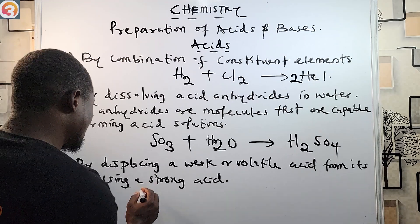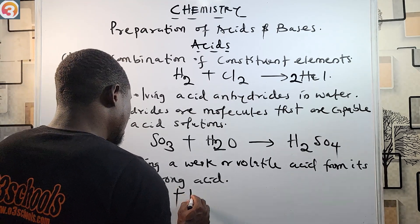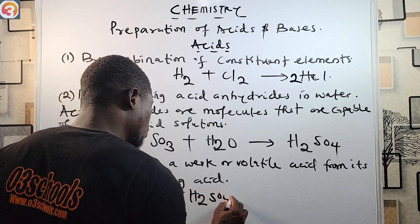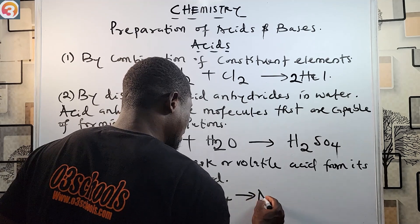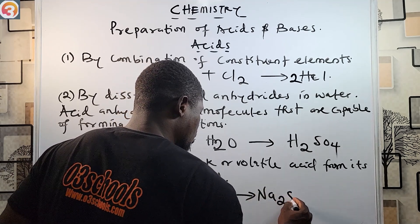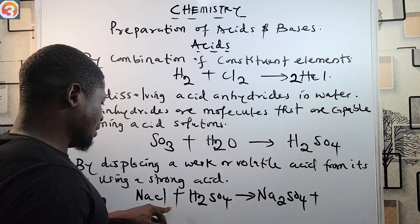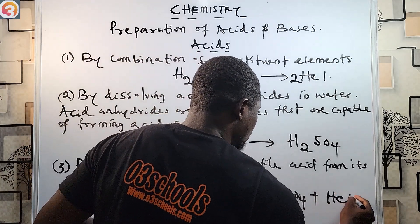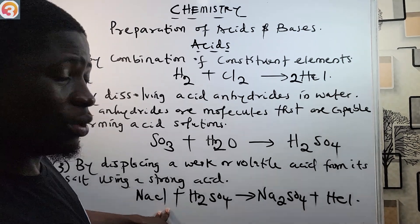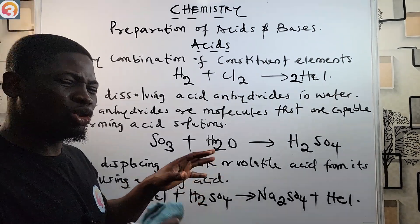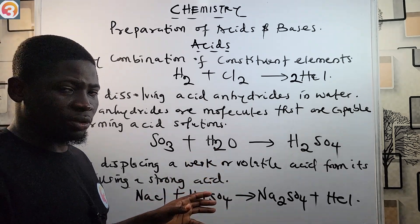For example, sodium chloride (NaCl) reacts with H₂SO₄, which is a very strong acid, to give Na₂SO₄ plus HCl. This is another way we can prepare an acid — by using a strong acid to displace a weak or volatile acid from its salt.